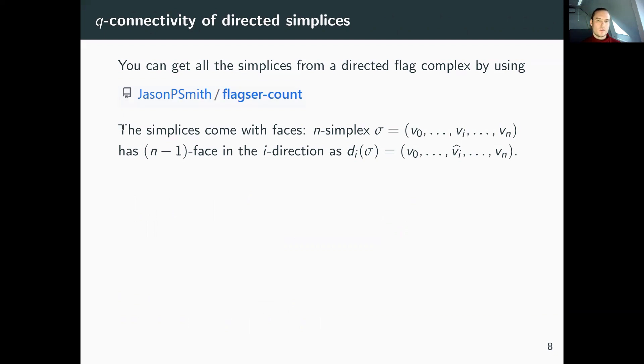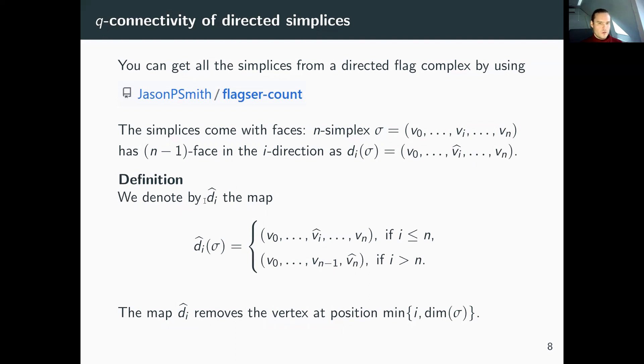Simplices come with faces. If we have an n-simplex σ, it has an n minus one face in the i-direction where we apply the face map di, which removes the vertex at position i. Let's modify this face map slightly with the di hat map. If i is less than or equal to the dimension of your simplex, we remove the vertex at position i as usual. If i is larger than the dimension, we always remove the vertex from the end, the last vertex. Essentially, this map removes the vertex at position minimum of i or the dimension of your simplex.